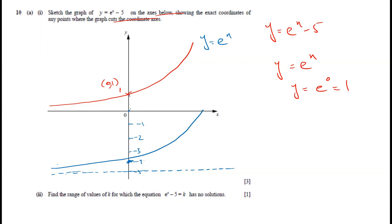So the y-intercept is now (0, -5) because we have shifted the graph down by 5 units. The graph of y = eˣ - 5 will never go below -5.